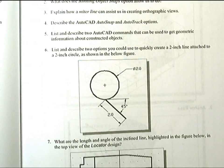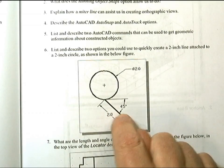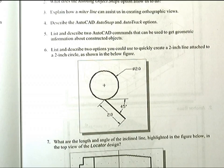Number six: List and describe two options you could use to quickly create a two inch line attached to a two inch circle. So in the object you have a two inch circle and a two inch line. You could set up the grid and snap increments to one inch intervals. You could create a two inch circle with the circle command, and then create a line by placing the first endpoint directly below the center point and use the relative coordinate method input to create the two inch line.